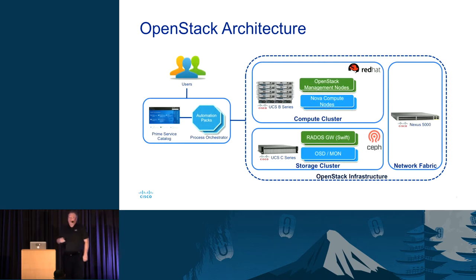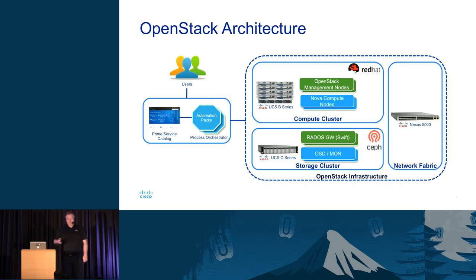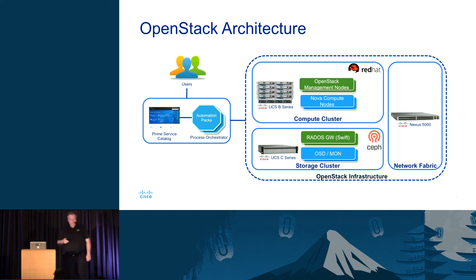When we deployed OpenStack about a year and a half ago in Cisco IT, we obviously used Cisco infrastructure — Cisco servers. Our compute, network, and management nodes are all based on the UCSB series, while our storage cluster, which runs Ceph, runs on UCSC series. Our network fabric is Nexus 5K and 9K switches. To allow people to provision into our cloud, we use our Prime Service Catalog and Process Orchestrator with automation packs specifically for OpenStack, allowing users to provision projects within the cloud. After provisioning their projects, users leverage OpenStack native APIs to access cloud resources.